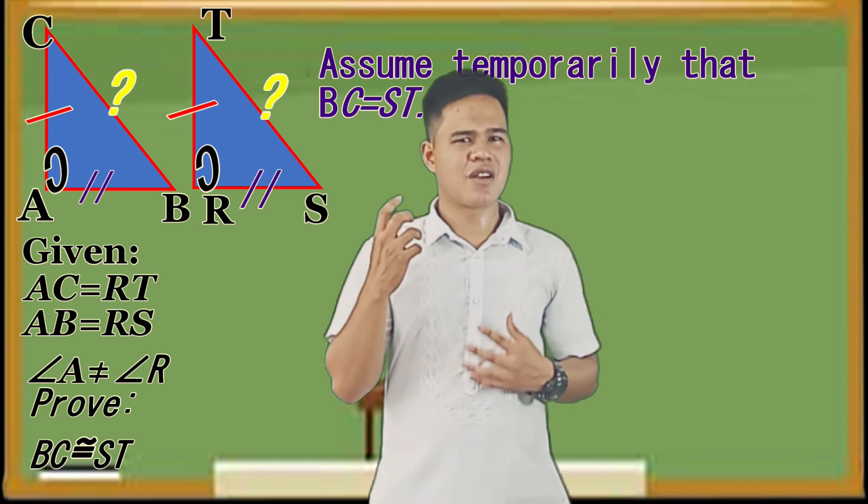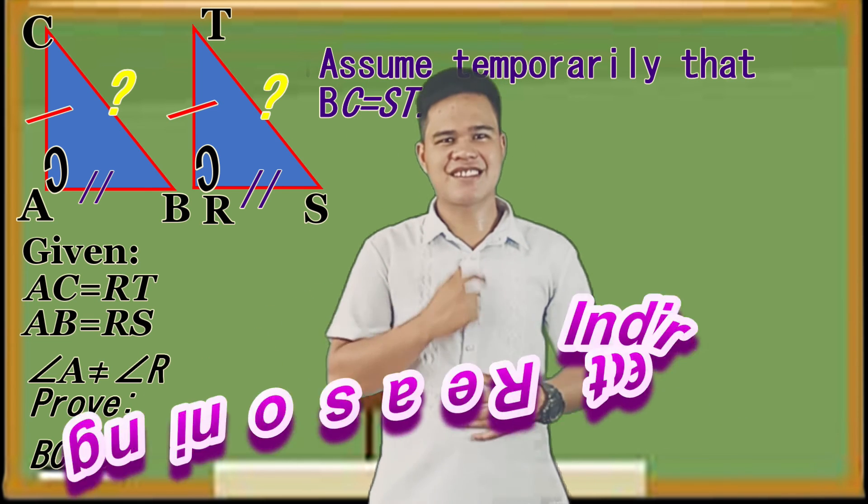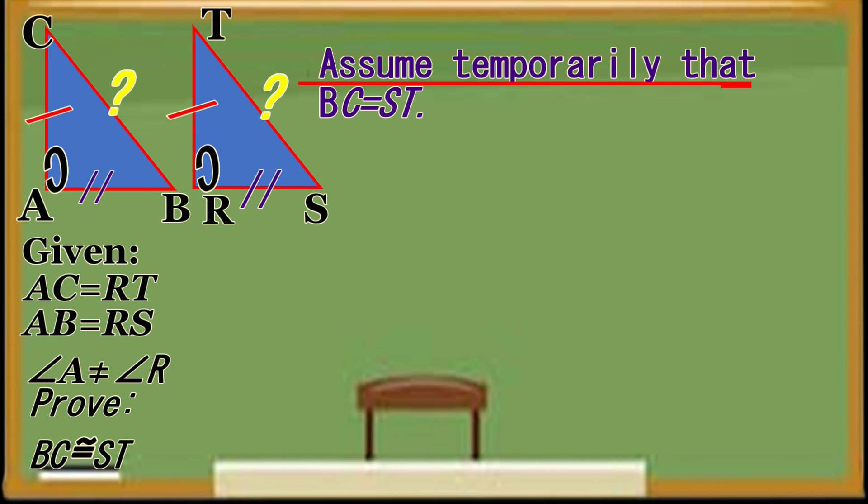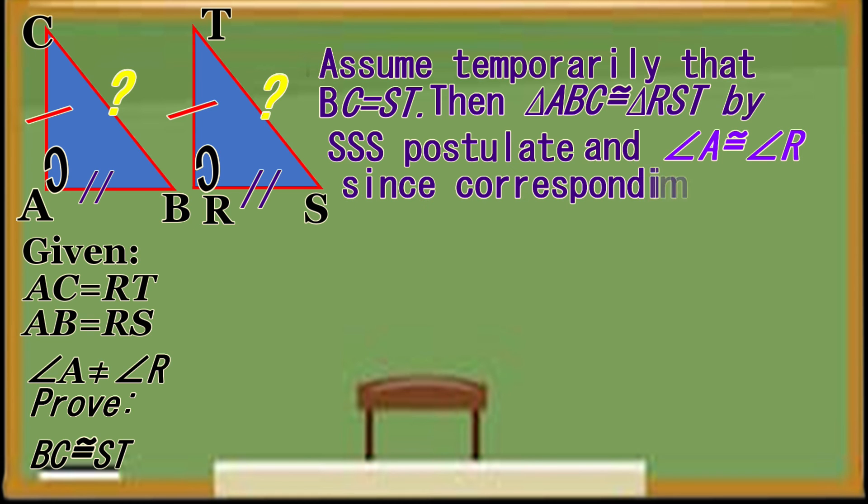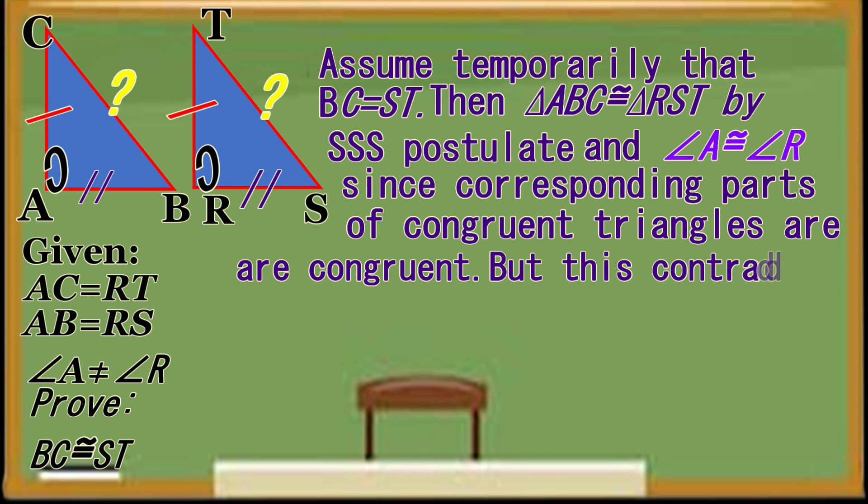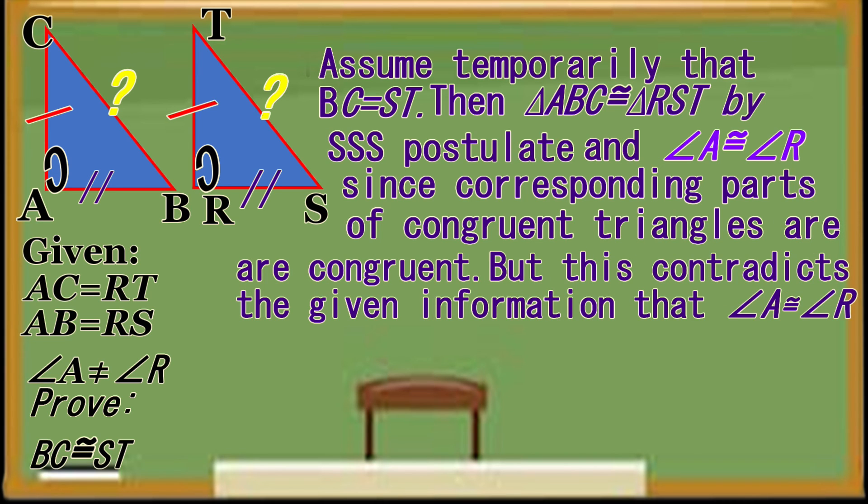We are going to assume temporarily that BC equals ES. This is indirect reasoning. Then triangle ABC is congruent to triangle RES by SSS or side-side-side postulate. And angle A is congruent to angle R since corresponding parts of congruent triangles are congruent.